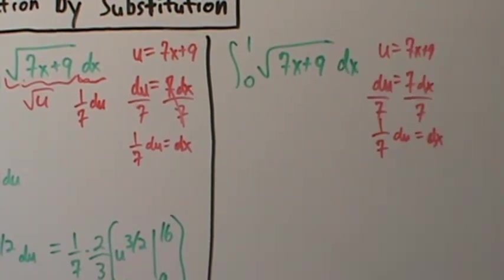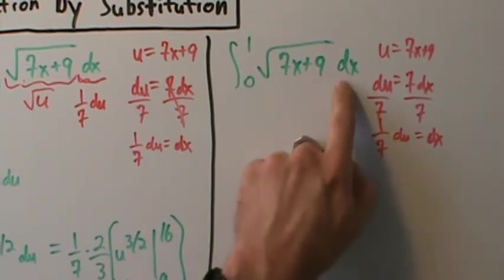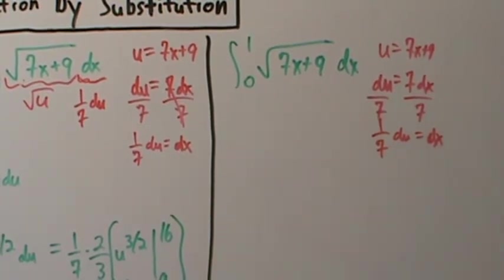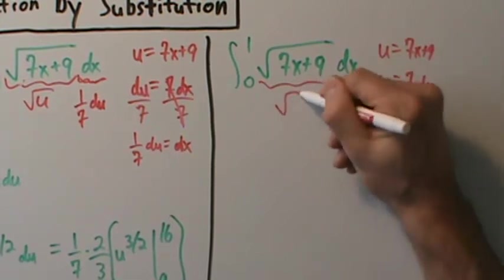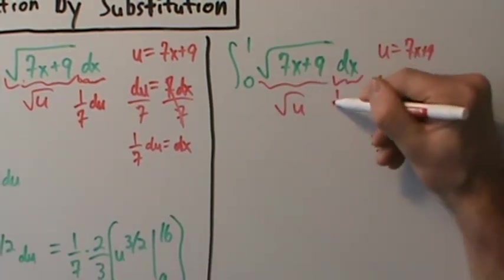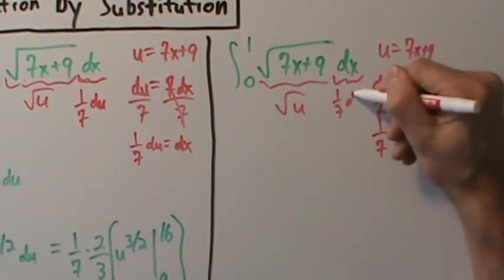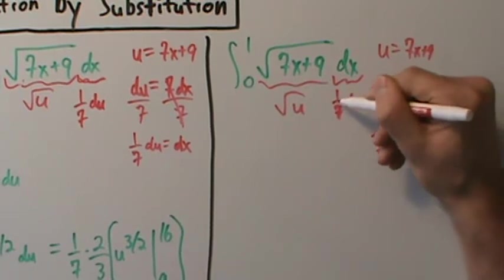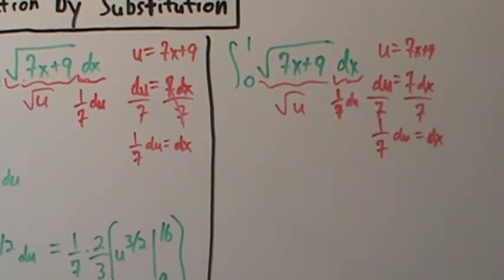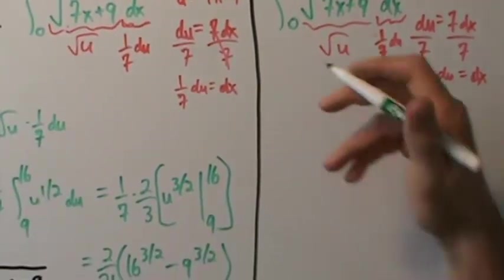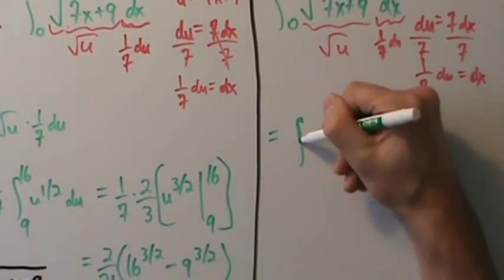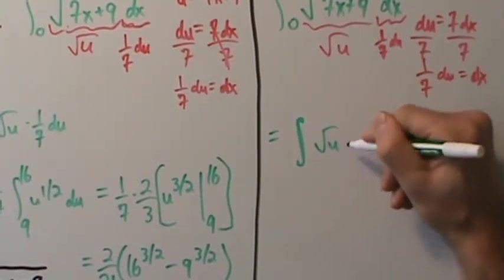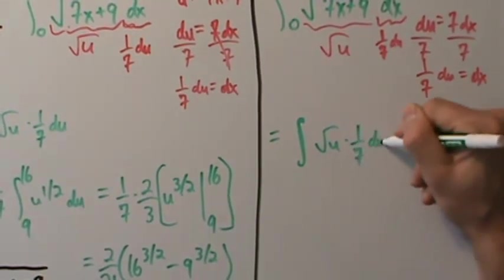So the integrand becomes √u × (1/7) du. Now, instead of changing the limits, the other approach is to write the integral from x = 0 to x = 1 and continue integrating in terms of u.